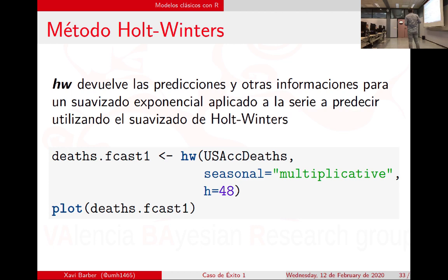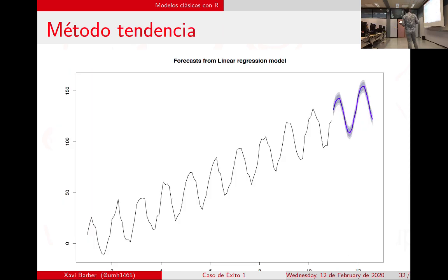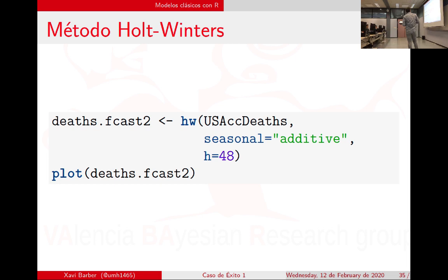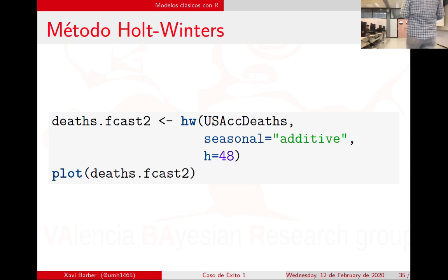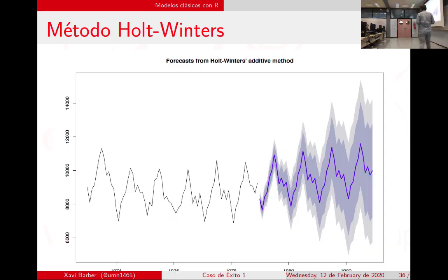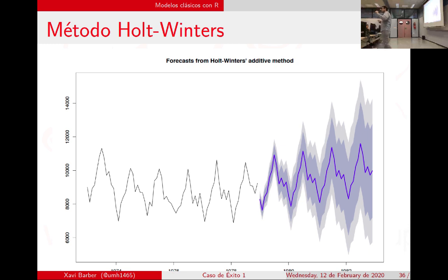Por ejemplo, voy a hacer el Holt-Winters del número de muertes en Estados Unidos de manera multiplicativa. Le digo que es un modelo aditivo y que me haga la predicción de las 48 siguientes observaciones. Parece que lo recoge muy bien. Otra herramienta que funciona bien; lo que tenéis que ir haciendo es ver según el patrón de la serie qué método funciona mejor.